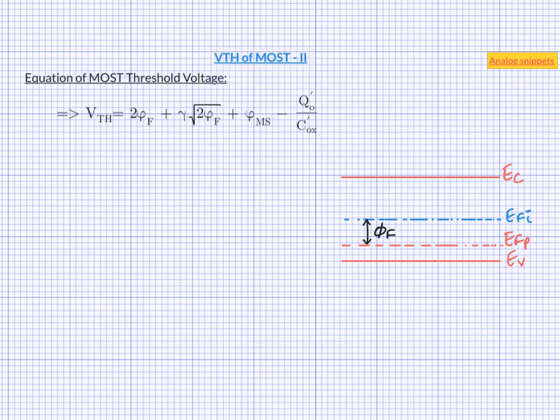Recall the band diagram of a p-type silicon. EC is the bottom of conduction band, EV is the top of valence band and EFI is the Fermi level of the pure or intrinsic silicon. As we increase the doping concentration of acceptor dopants, the Fermi level moves down towards the valence band.